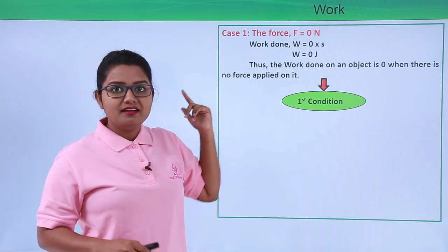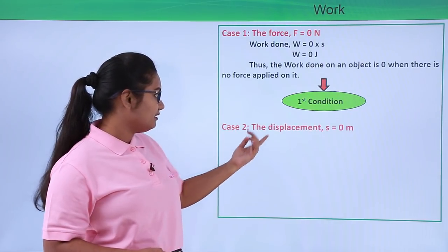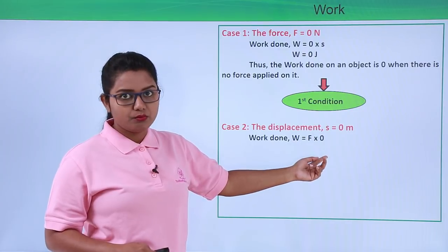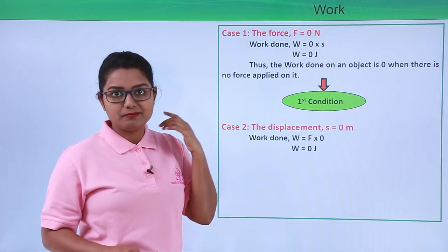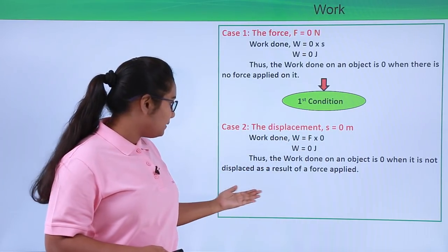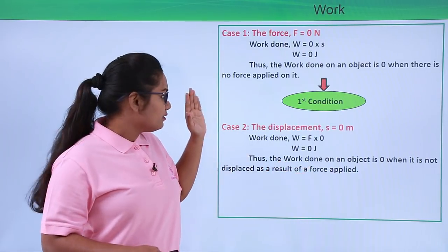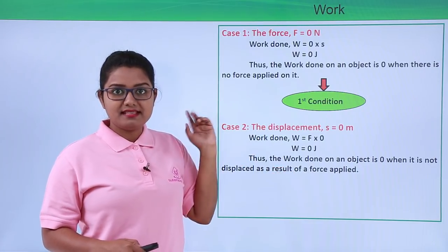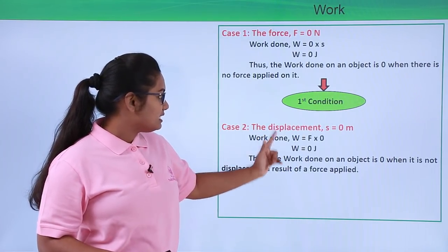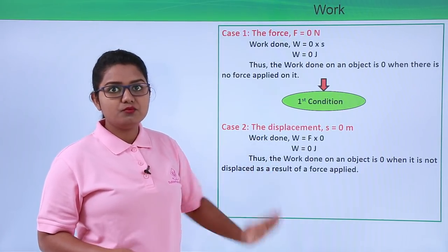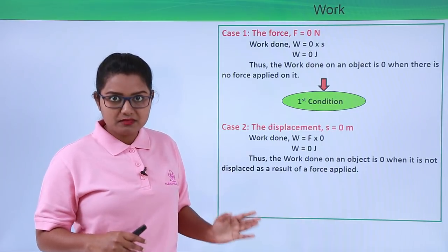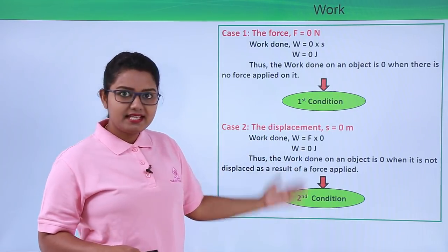For case two, let the displacement of the body be zero, that is S = 0 meters. Work done = F × 0 = 0. So work done equals zero even when the displacement of the body is zero. This means the work done on an object is zero when it is not displaced as a result of the force applied. This corresponds to the second condition: there must be a displacement as a result of the force. This verifies our second condition of work done.